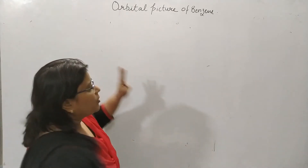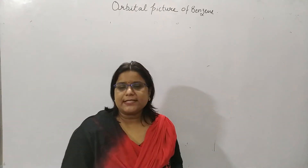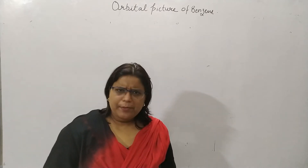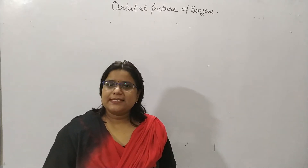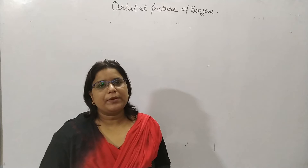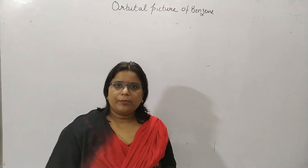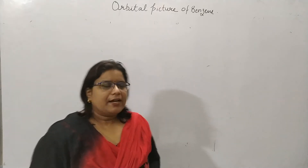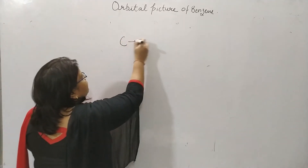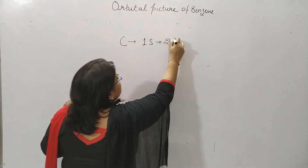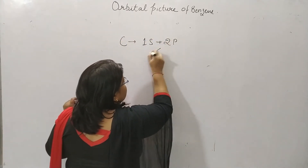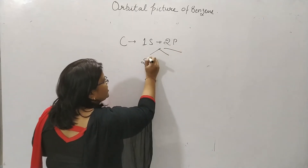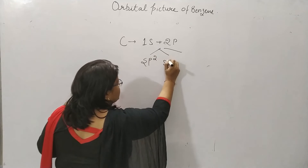In the orbital picture, we should discuss about the hybridization. Hybridization is the intermixing of the orbitals, and by intermixing, new orbitals are formed. Here in carbon, the 1s and 2p orbitals are mixing and they form 3 new sp2 hybridized orbitals.